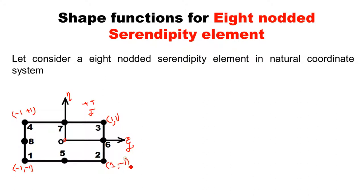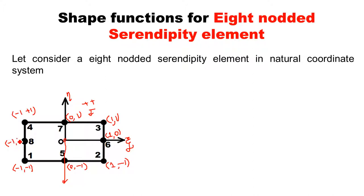These are the coordinates of the four corner nodes. For the middle nodes: node number 5 lies on the eta axis, so its xi coordinate is 0 and eta coordinate is −1 (downward). Node number 7 also lies on the eta axis, so xi is 0 and eta is +1 (upward). Node number 6 lies on the xi axis, so xi is +1 and eta is 0. And node number 8 has xi = −1 and eta = 0.